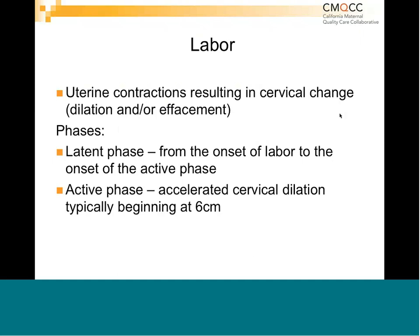One of the key ones we tackled was how to define labor, and then how to define induction, and then how to define augmentation. But to define those last two, you have to define labor first. Labor starts off pretty simple: uterine contractions resulting in cervical change. Cervical change can either be dilation or effacement — this is not calling out a certain dilation or a certain degree of effacement, but it's change over time in the presence of uterine contractions. They called out two phases: latent phase and active phase. Active phase is typically beginning at six centimeters, representing the new research that's come out.